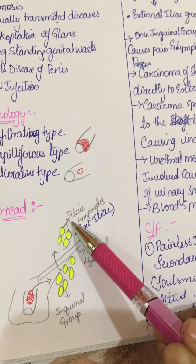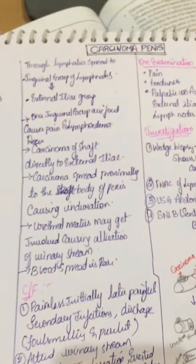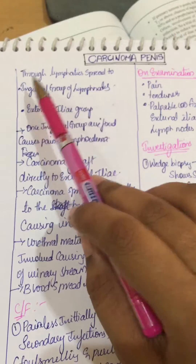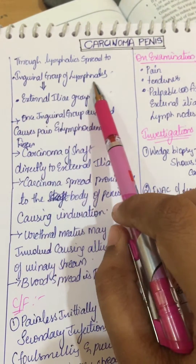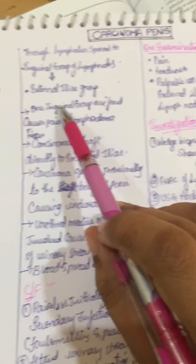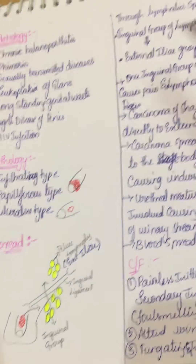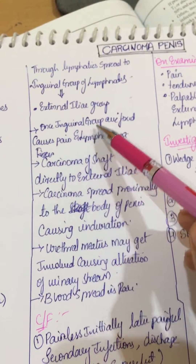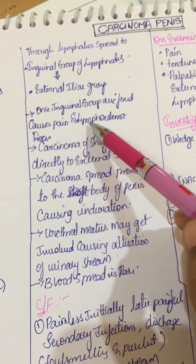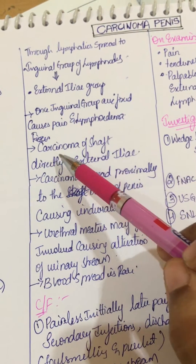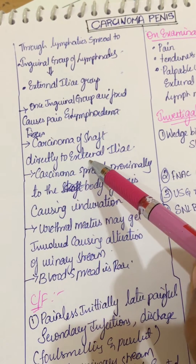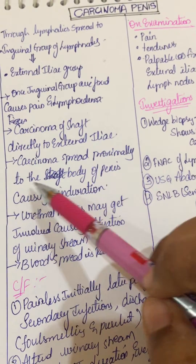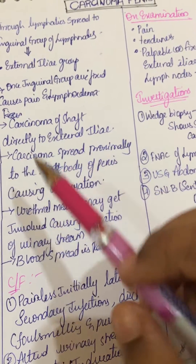It spreads through lymphatics primarily to the inguinal group of lymph nodes and later to the external iliac group of lymph nodes. Once inguinal nodes are fixed, it causes pain and lymphedema. Carcinoma of the shaft spreads directly to the external iliac lymph nodes.